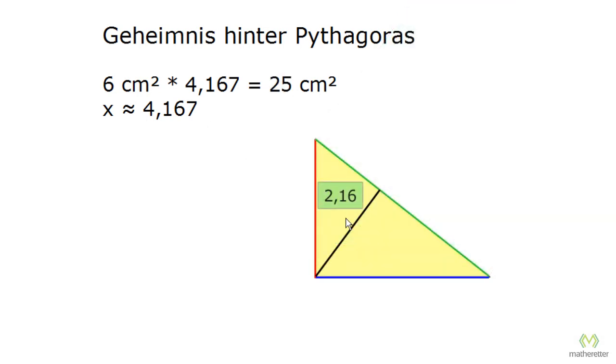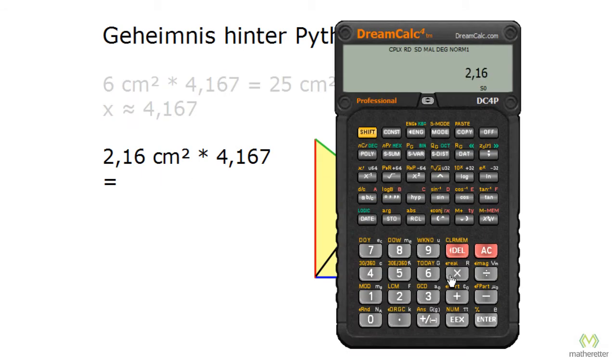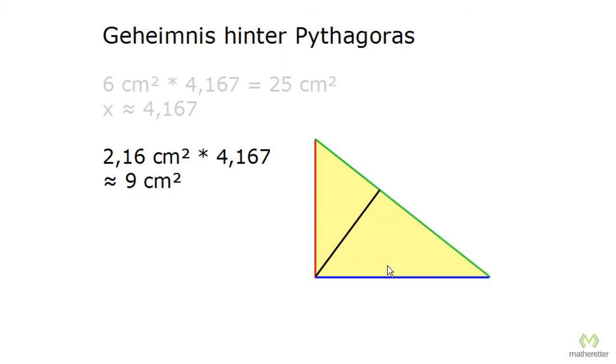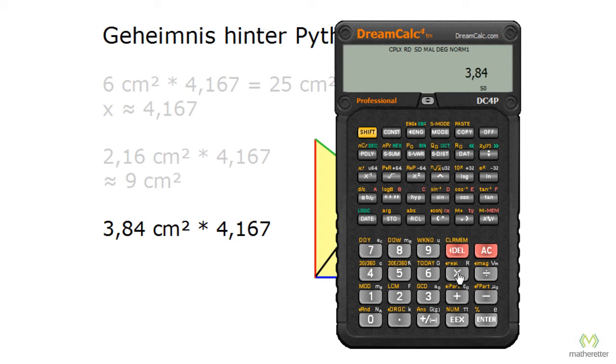What do we do next? We look at the 2.16. If we take the whole triangle and expand it to 25 square centimeters, we also have to multiply the 2.16 there by the factor 4.167. Let's do that with the calculator. We enter 2.16 times 4.167 and get around 9 square centimeters. Next take our triangle on the right side, which is 3.84 square centimeters, and multiply that by the enlargement factor as well. 3.84 times 4.167 and we get 16 square centimeters rounded.